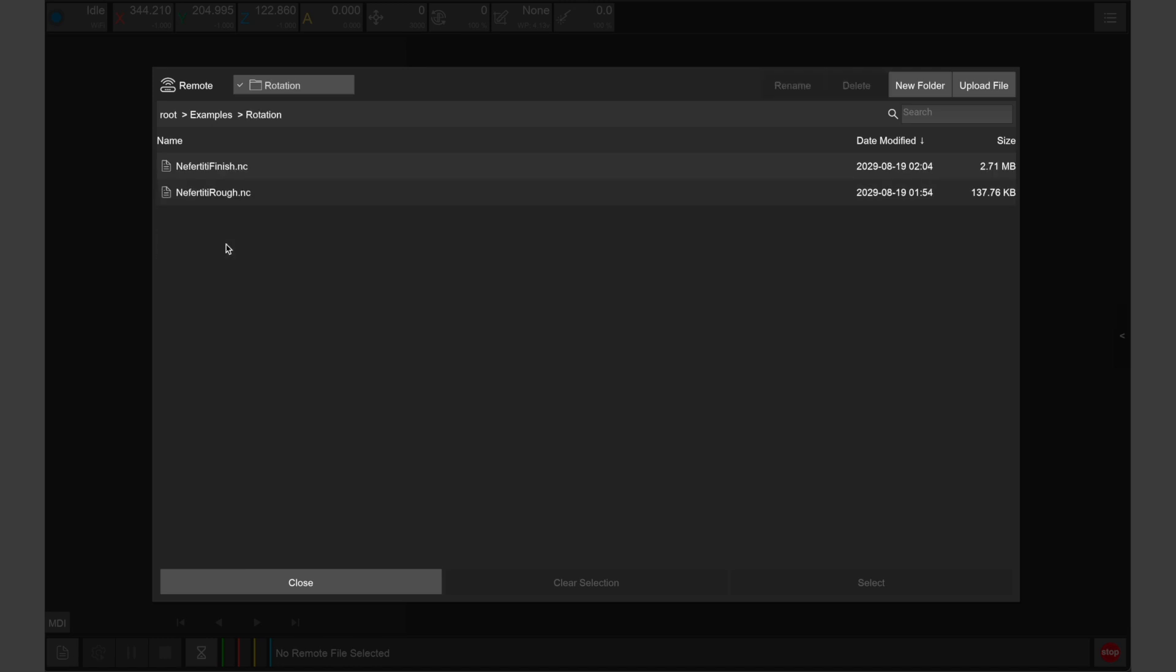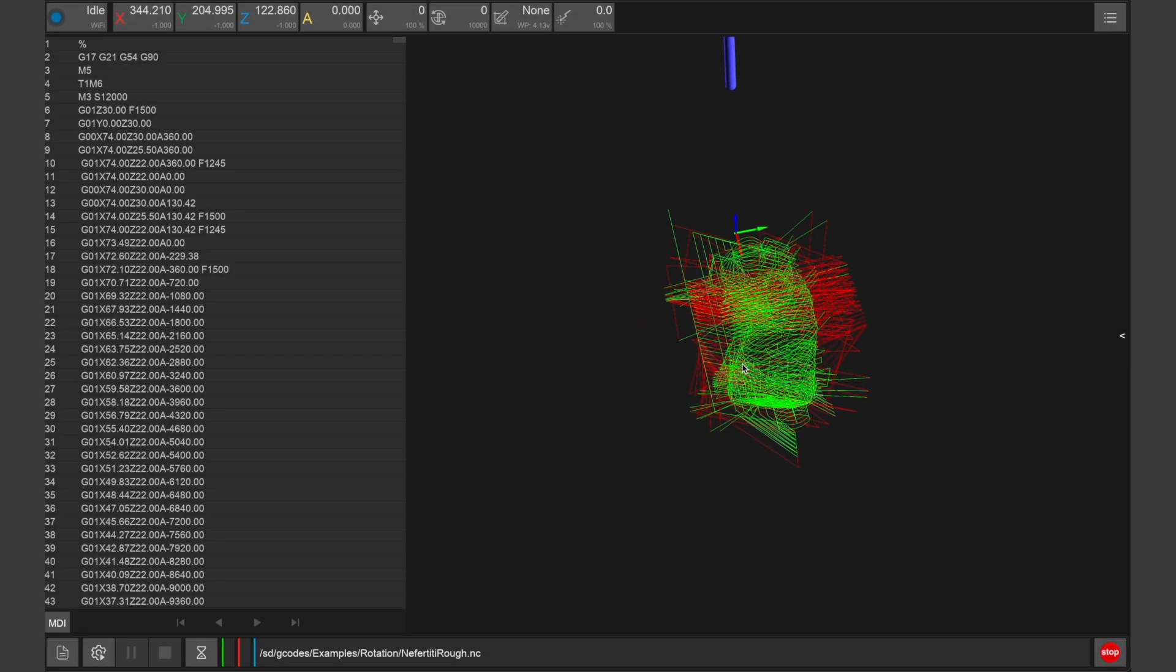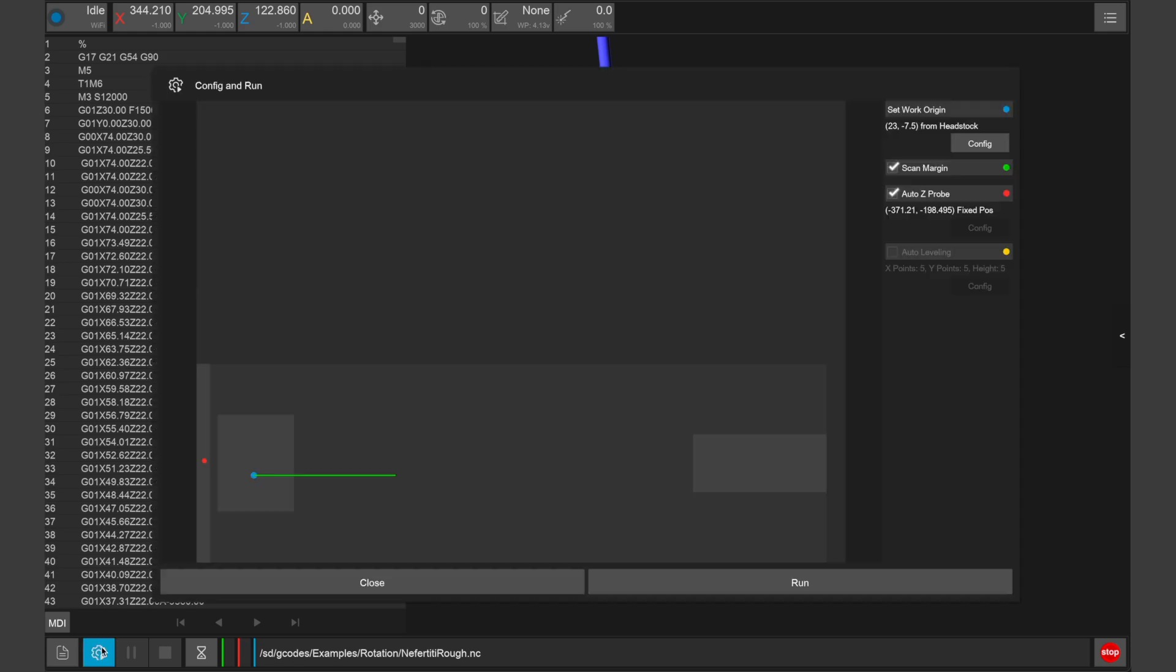There are two files in the rotation folder for the fourth axis relief. We will start by opening the roughing file first. Once open we can preview the design and toolpath before clicking config and run.